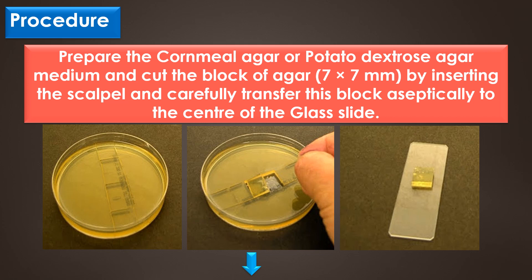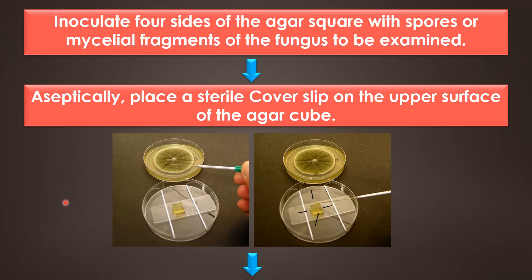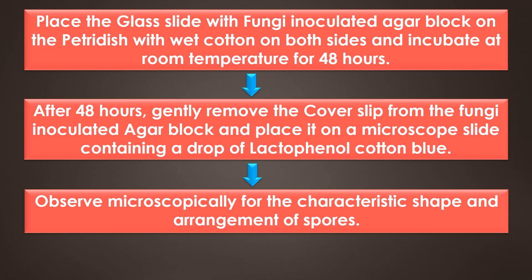For the procedure: first, prepare the cornmeal agar or potato dextrose agar medium and cut a block of agar by inserting the scalpel, then carefully transfer this block aseptically to the center of the glass slide. Next, inoculate the four sides of the agar square with the spores or mycelial fragments of the fungus to be examined. Be sure to flame and cool the loop prior to picking up the spores. After that, aseptically place a sterile coverslip on the upper surface of the agar cube. Then place the glass slide with the fungi-inoculated agar block on a petri dish with wet cotton on both sides and incubate at room temperature for 24 to 48 hours.